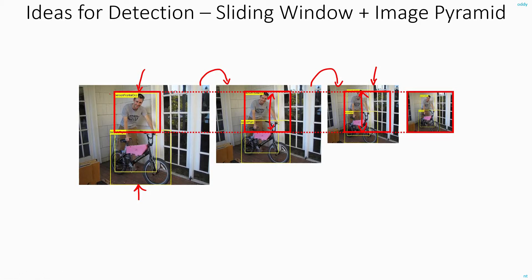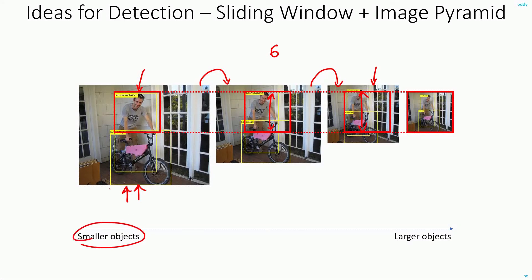Note that the sliding window still has to be used on all these scales. Experimentally, it has been found that they typically use six different scales of the image — I have shown only four here, but usually six are used. Because the original image is very large, smaller objects get detected at the larger scale. As you scale down the image to a smaller one, larger objects get detected on the smaller-sized image. This is the concept behind the image pyramid.